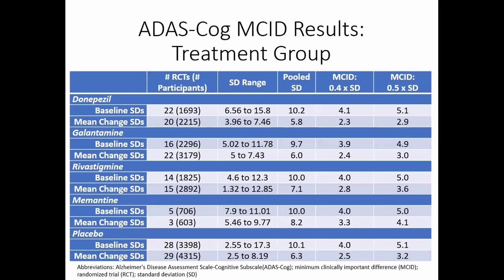Looking at the ADAS-COG — the second scale we were interested in — the results are again quite comparable, although I'll point out that for the treatment memantine, if you look at the mean change standard deviations row, the MCIDs derived at 0.4 and 0.5 are a little different from the other mean change SD MCID values. That's based on only three studies, and there was one outlying study. When I removed that outlying study, the values at 0.4 and 0.5 became much more similar to the others. So it may be that if you have too few studies, the method doesn't work as well.